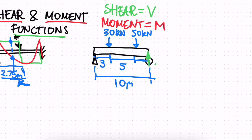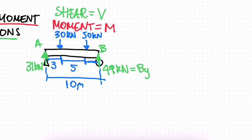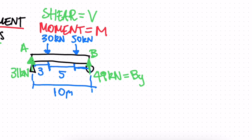We already have the reactions solved: at point B, BY is 49 kilonewtons upward, and at point A, the reaction is 31 kilonewtons. It's really important to have forces and reactions solved before analyzing the beam. The first step is to look at all forces and cut the beam into sections where there's a change in force. We have three sections here, and because of those three sections we're going to end up with three shear and three moment functions.